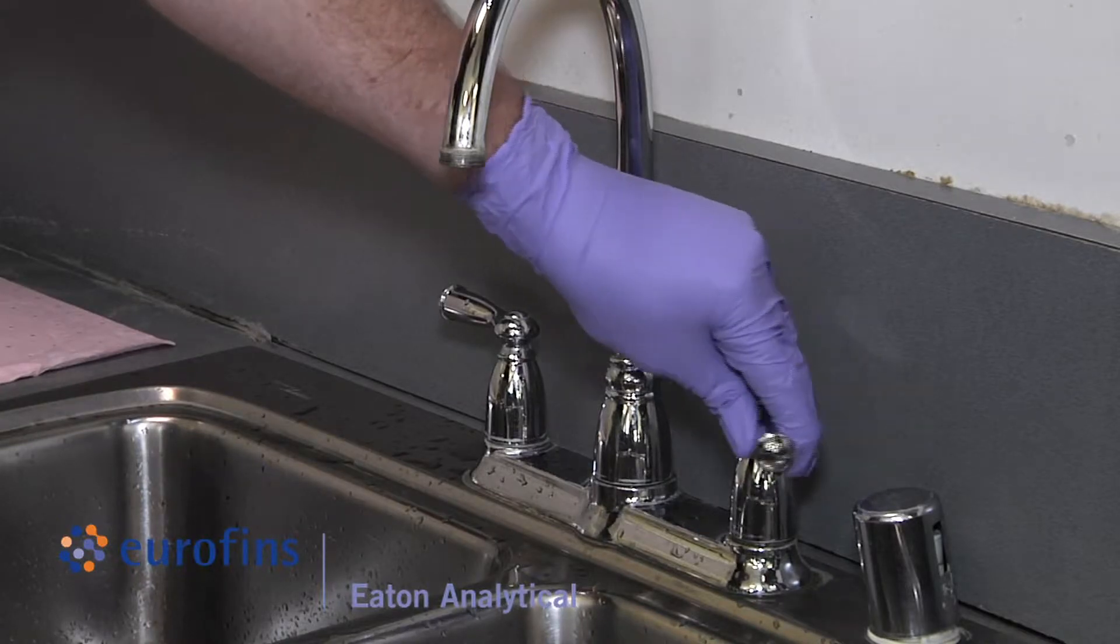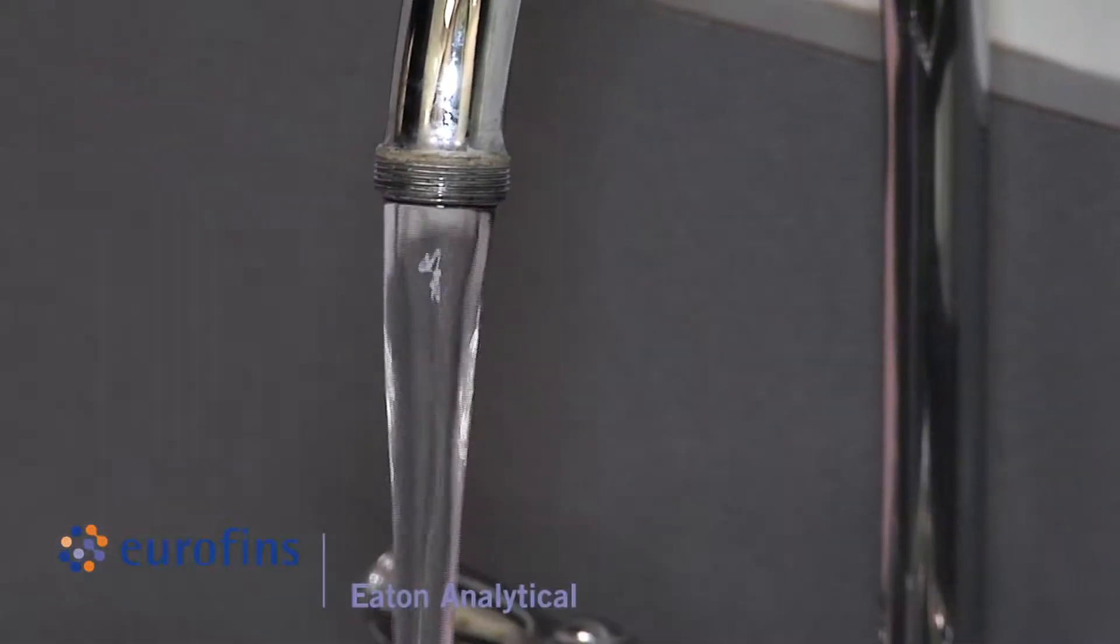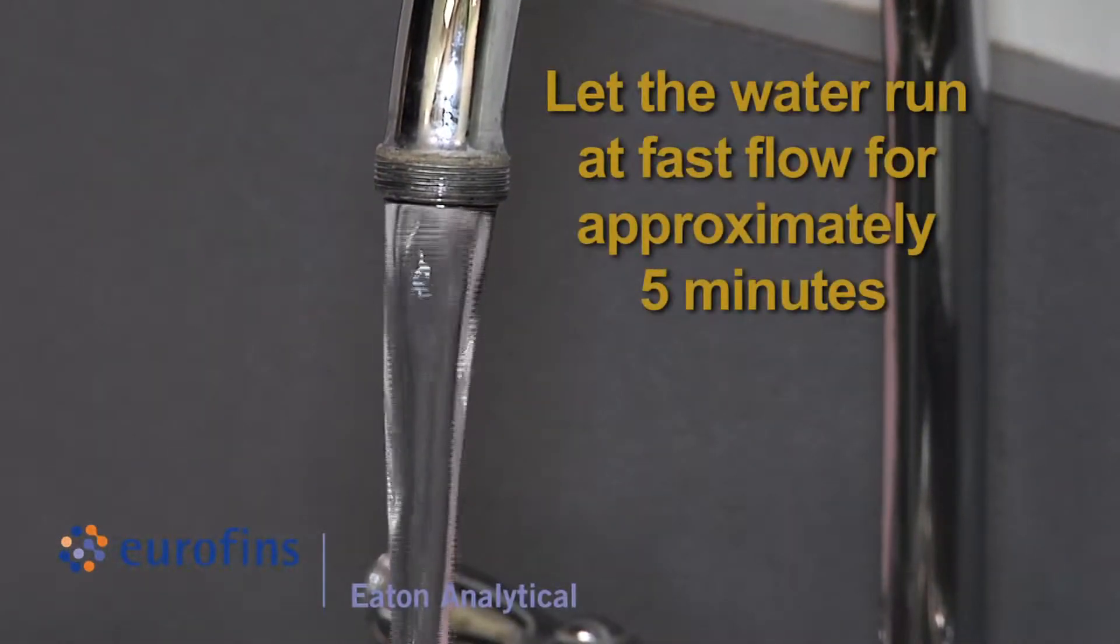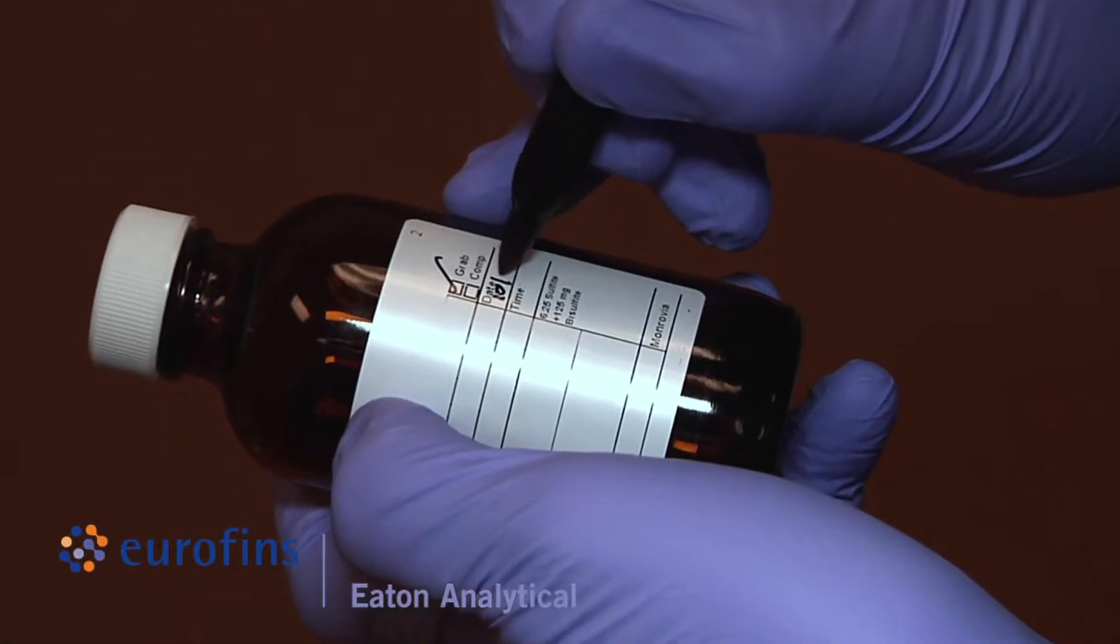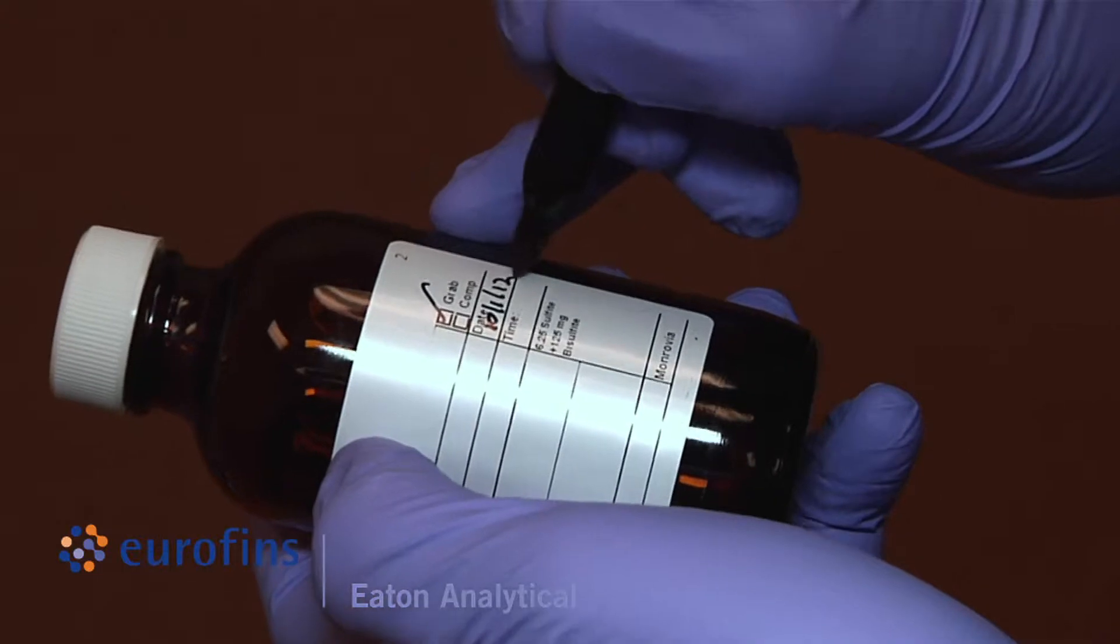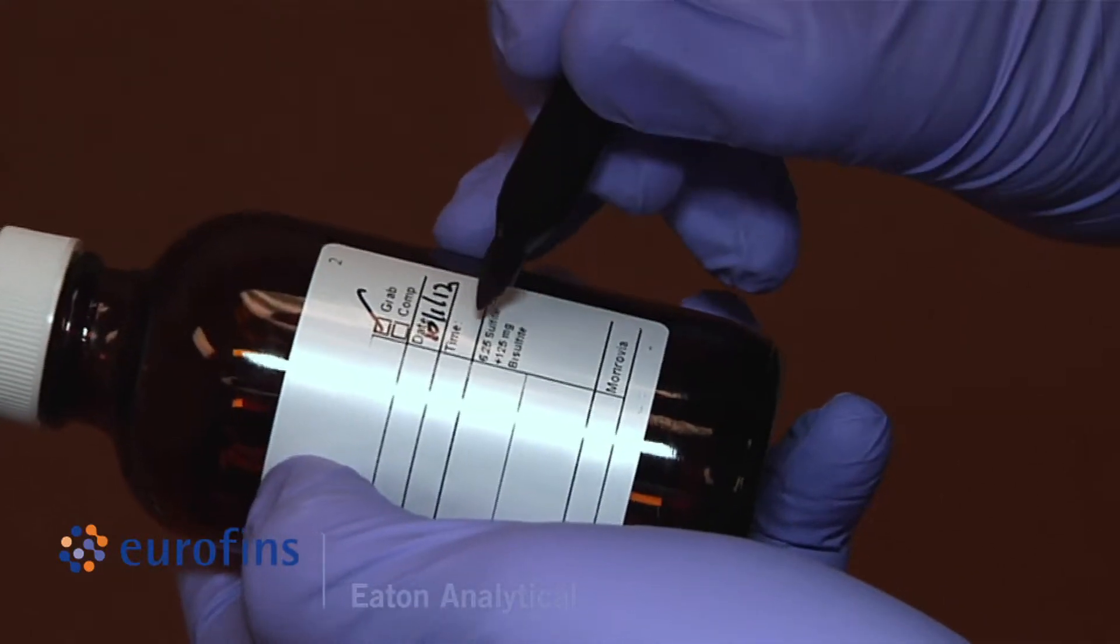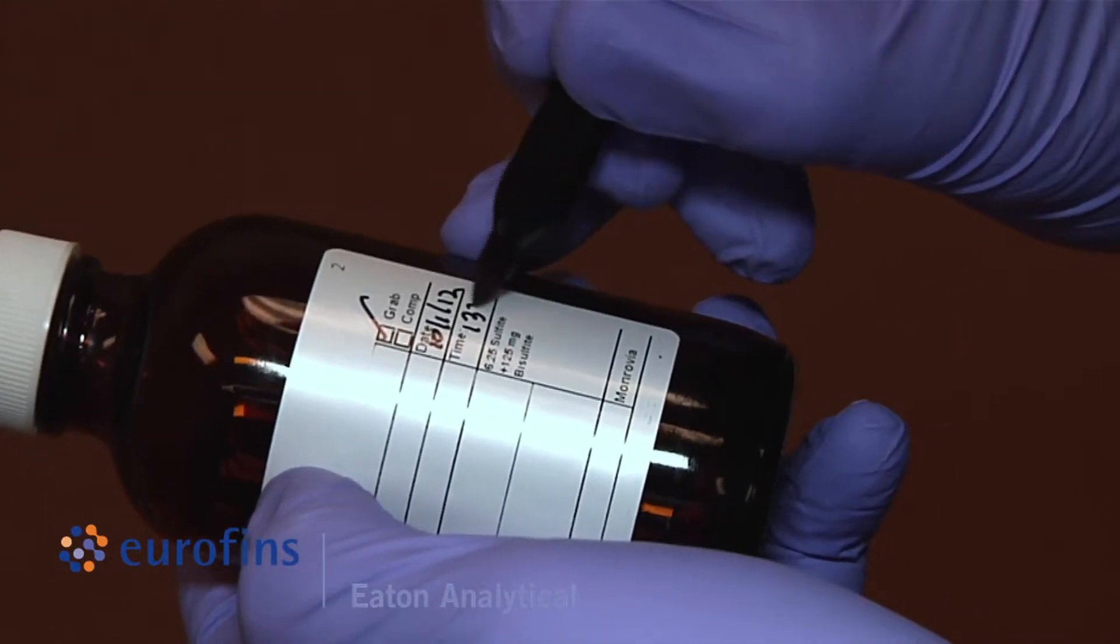Open the tap and let the water run at fast flow for approximately five minutes. Before filling, label bottles with required information that is not already pre-printed such as the sample ID, date, and time of collection.